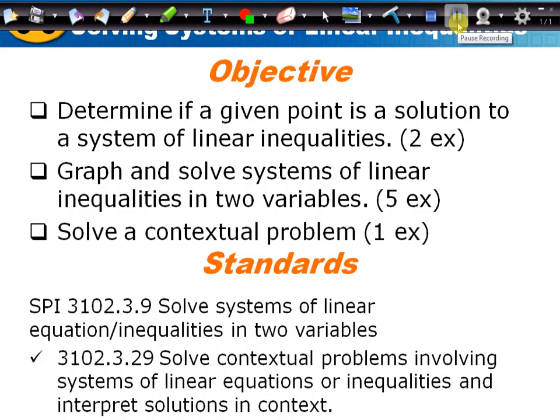Today's lesson is 6-6. Our objectives are to determine if a given point is a solution to a system of linear inequalities, to be able to graph and solve systems of linear inequalities in two variables, and then to solve a contextual problem, which we'll do in class tomorrow.